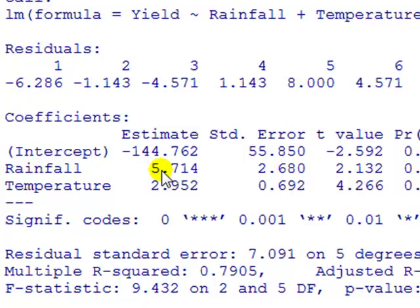But importantly also we say that it's holding temperature constant. So let's say it again, if rainfall increases by one inch, the model predicts that the yield will increase, because it's a positive sign, by 5.7 bushels per acre, holding temperature fixed.